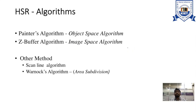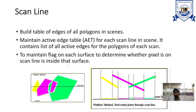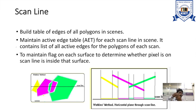In the hidden surface removal algorithm, the scanline algorithm is one type. As you can see in this figure, there are a number of scanlines. What happens is we are having different polygons — one after another polygons are there. So we have to identify which is our visible surface.